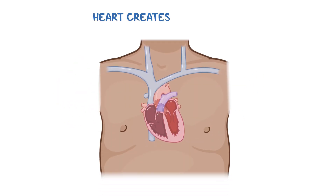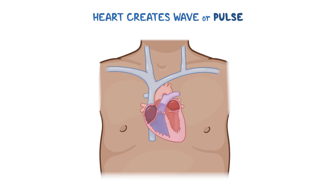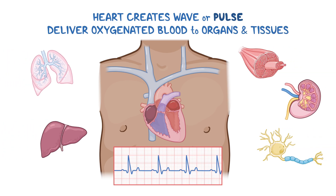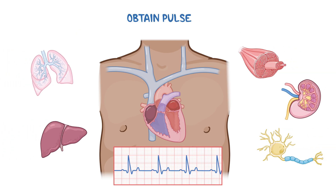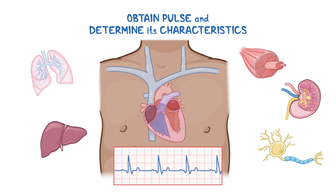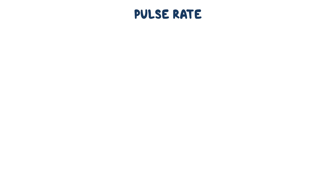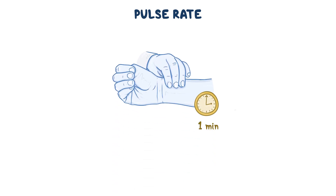With every heartbeat, the heart creates a wave or pulse that's sent to arteries all over the body in order to deliver oxygenated blood to our organs and tissues. As a healthcare professional, you need to be able to obtain a pulse and determine its characteristics, including the pulse rate, rhythm, and amplitude. You can calculate the pulse rate by counting the number of pulsations felt over an artery in one minute.